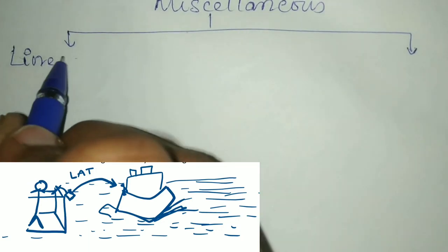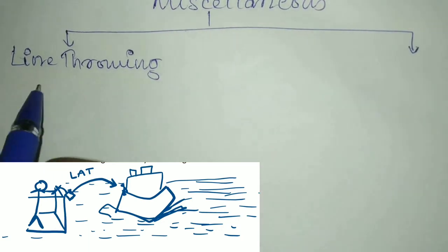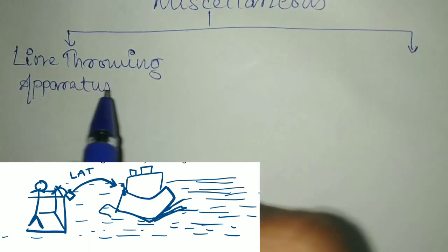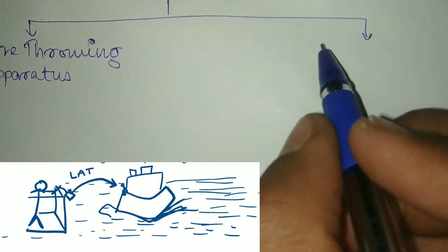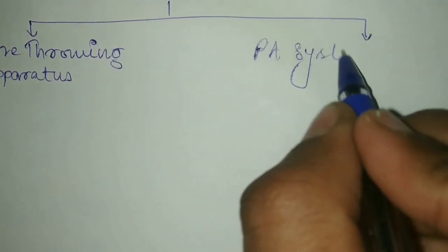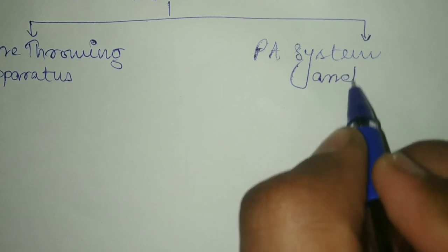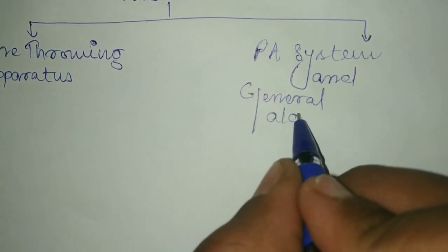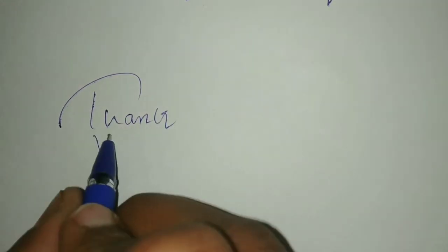The first one is the line throwing appliance or line throwing apparatus. Second is the public address system or the general alarm system. These are the basic life-saving appliances that are found on board cargo or cruise ships.